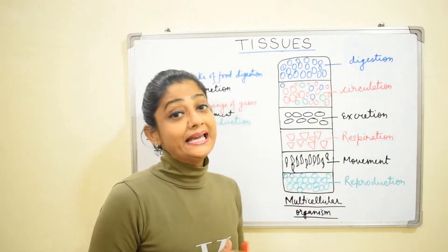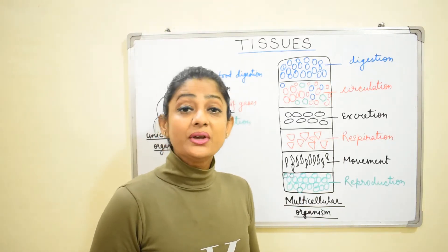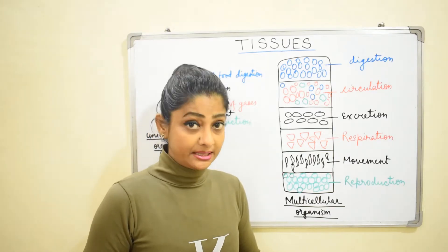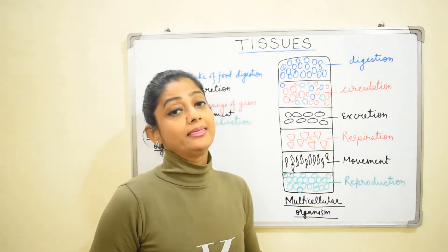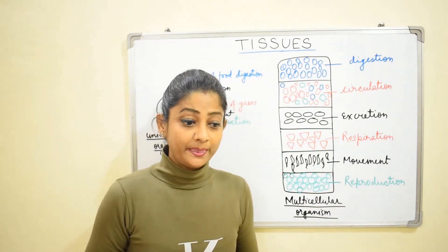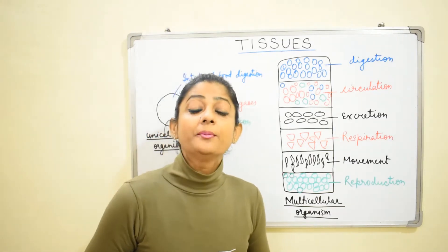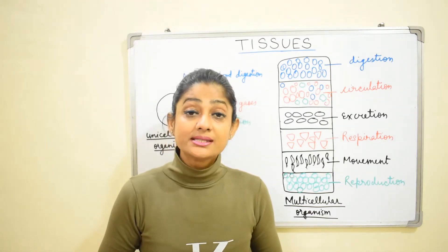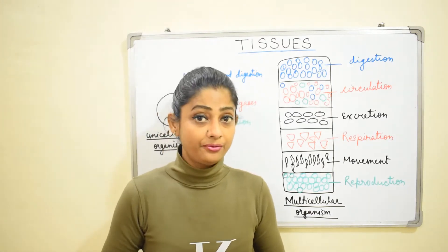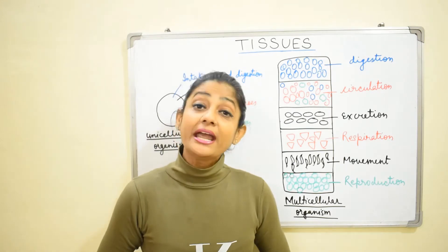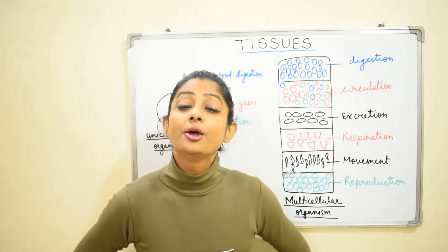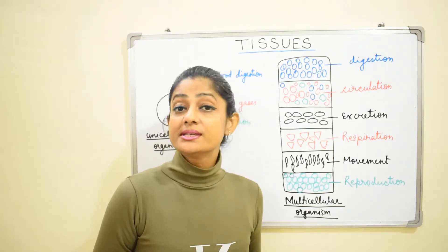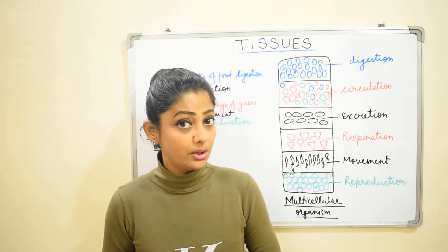Hello everyone! In this part we are starting a new chapter of NCRT class 9 biology and that is tissues. In the last part we have studied about cell. Cell is the basic unit of life. Each and every organism is made up of cells, whether it is unicellular or multicellular.